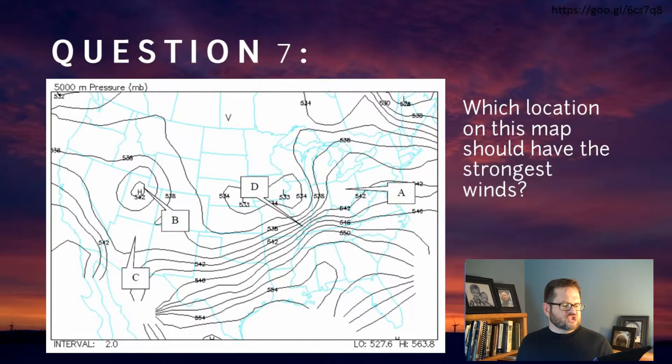I've labeled four locations on the map there. See how there's sort of a box and then they point to a location. Which of the locations on the map should have the highest winds?